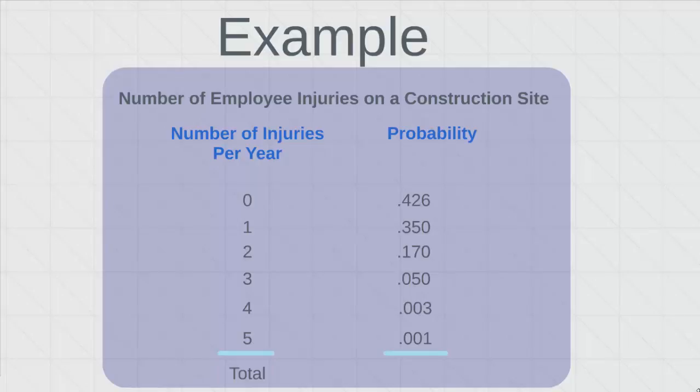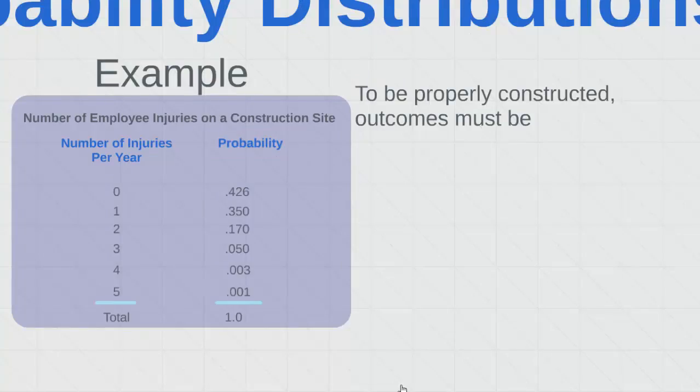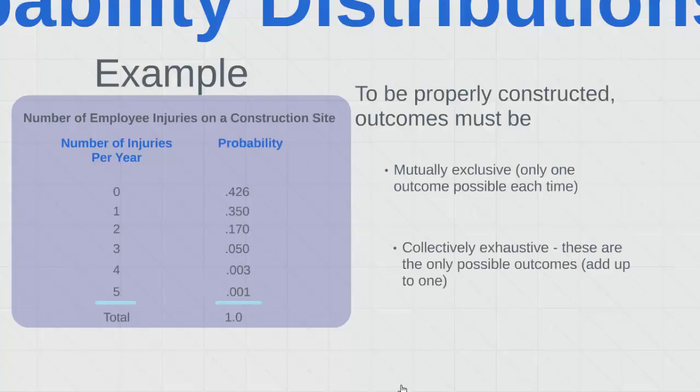The total of the probabilities should be 1. And this does add up to 1 because if you add up all the probabilities, it should account for every single year in our data set. Let's look a little more at features of probability. In order to be properly constructed, outcomes must be both of these two things: mutually exclusive. In other words, only one outcome is possible each time. Each year, you can only have either 0, 1, 2, 3, 4, or 5. But you can't have both 0 and 3 injuries in a given year. And then losses must be collectively exhaustive. This means that these are the only possible outcomes, and they add up to 1, just as we found.